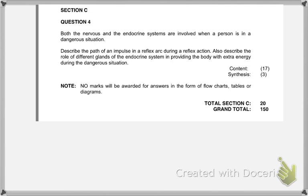So the question says, both the nervous and endocrine systems are involved when a person is in a dangerous situation. So the first thing that should be coming to your mind here is dangerous. Describe the path of an impulse in a reflex arc during a reflex action.